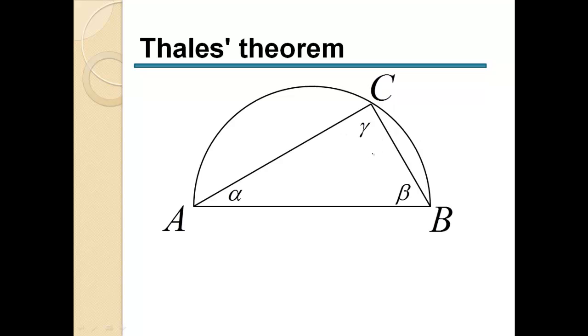90 degrees. And it doesn't matter where you put your point C, it will always stay 90 degrees. So it's invariant from the position. Now, how did he prove this? The proof is pretty simple.